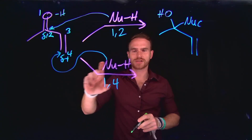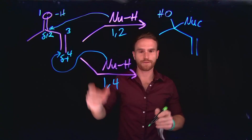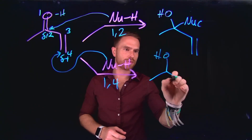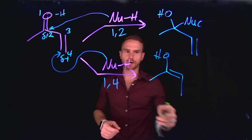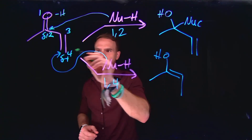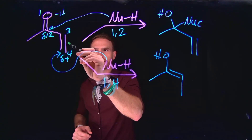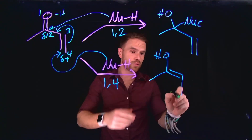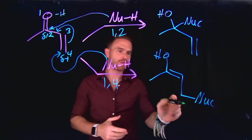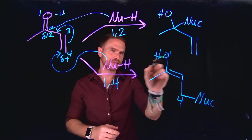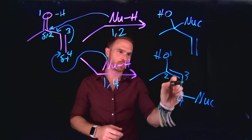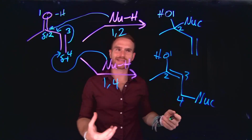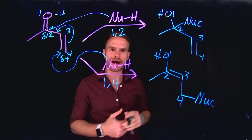Instead, if the nucleophile attacks at the electrophilic beta carbon position, then we call this a 1,4 addition. Remember, the hydrogen is going to the oxygen, which is the one position, and the second number indicates where the nucleophile is going. So at the four position, we would be creating a brand new enol where the alkene has shifted. This occurs because once this nucleophile attacks, the pi electrons are moved to form our enol where the nucleophile is now at the four position. We call this 1,4 because one is the oxygen position, then two, then three, then four.